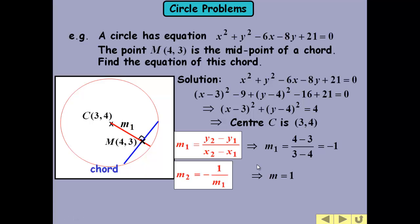Which is, of course, 1, isn't it? So our m is 1. Our x₁ and y₁ are 4 and 3. We can either use the equation y minus y₁ equals mx minus x₁ or find out c using y equals mx plus c. So the equation of the chord is y equals x minus 1.